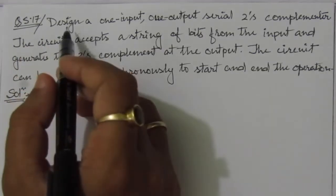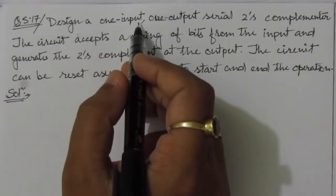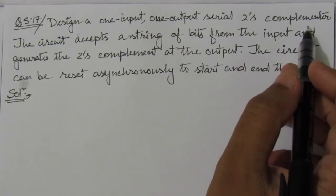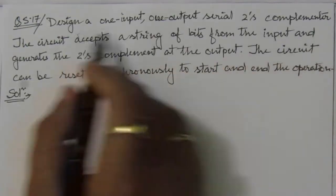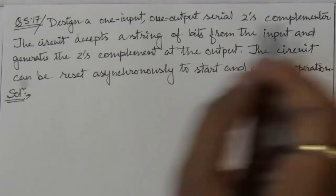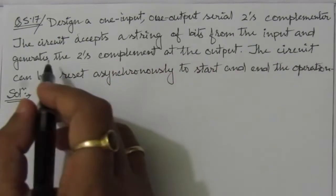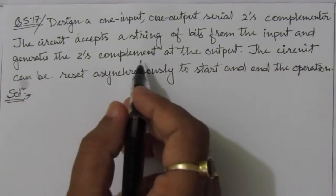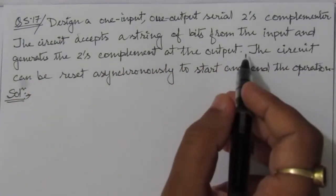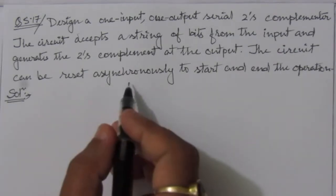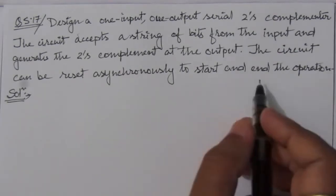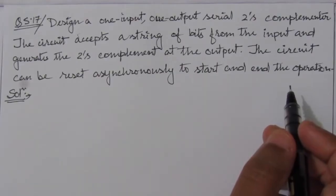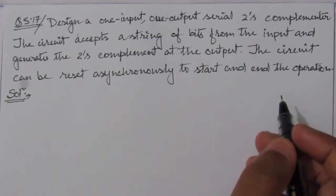The problem is: design a one-input, one-output serial two's complementer circuit. We have to design a two's complementer circuit that will have one input and one output. The circuit accepts a string of bits from the input and generates the two's complement at the output. The circuit can be reset asynchronously to start and end the operation, so we also have to define a reset option while designing.